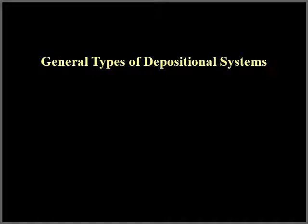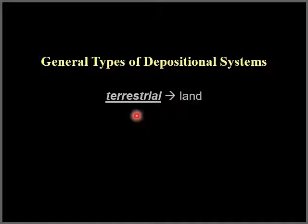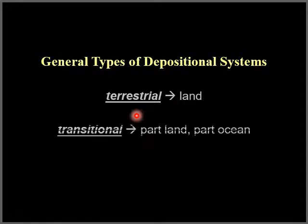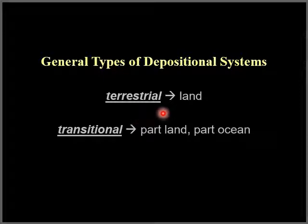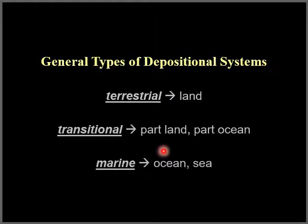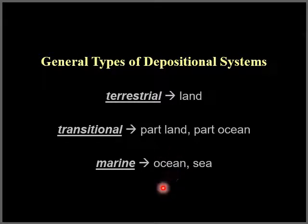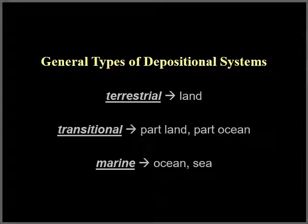There are three general types of depositional systems. The first one being terrestrial, which is occurring on land. We have transitional environments, partly on land and part ocean. And the third one would be marine, which includes oceans and seas.